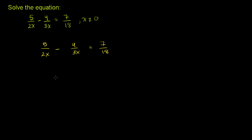Now, if we want to get rid of the 2 in the denominator here, we could multiply everything by 2. If we want to get rid of this 3 in the denominator, we could multiply everything by 3. If we want to get rid of this 18 in the denominator, we could multiply everything by 18.